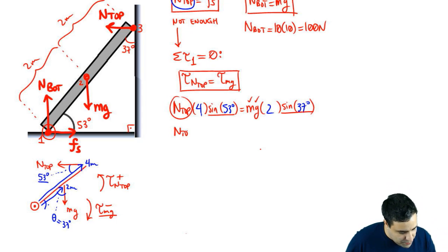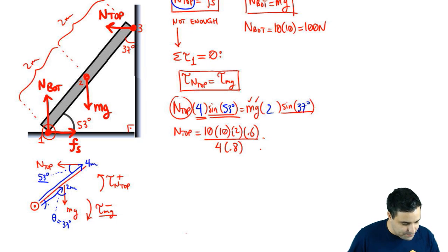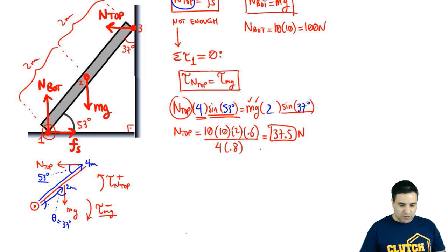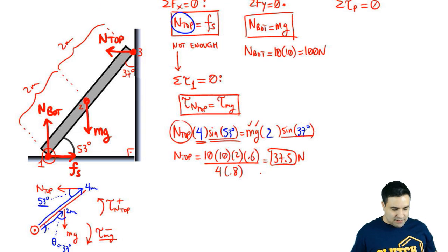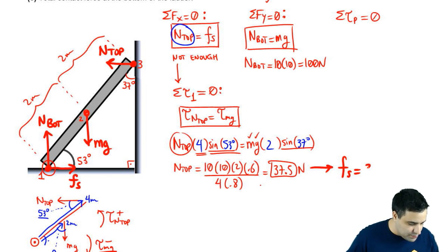N top will be m which is 10, g which is 10, times 2. Sine of 37 is 0.6 divided by 4 divided by sine of 53 which is 0.8. And if you multiply all of this you get 37.5 newtons. 37.5 newtons.